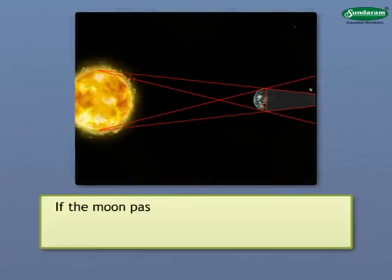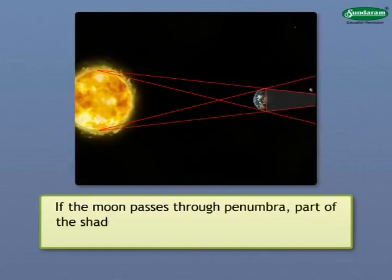However, if the Moon passes through penumbra, part of the shadow of the Earth appears on the Moon disk. This is called partial lunar eclipse.